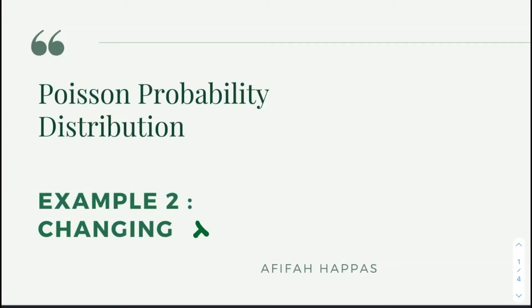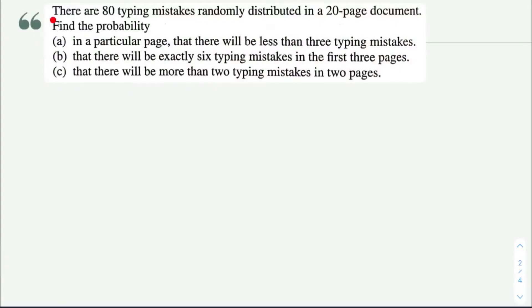Assalamualaikum. In this video I will explain to you about Poisson distribution. When you have a question that needs to change the lambda, if you are given there are 80 typing mistakes randomly distributed in a 20 page document, find the probability in a particular page there will be less than three typing mistakes.